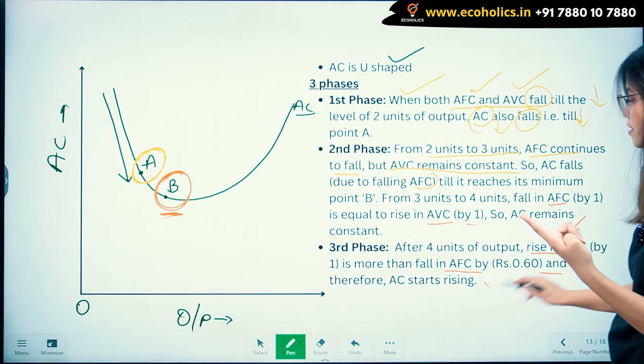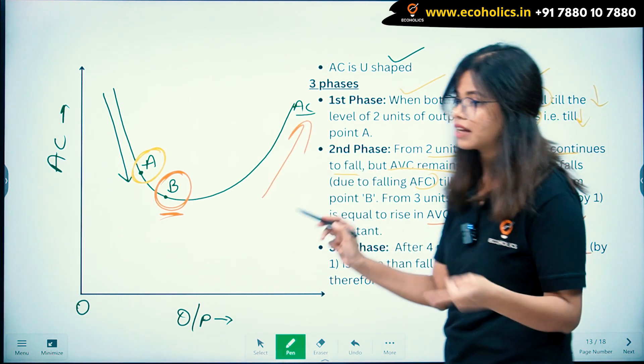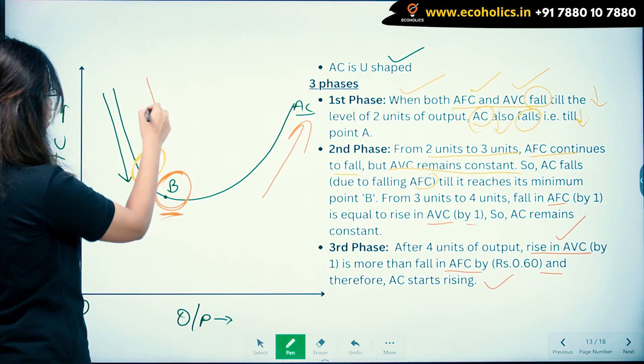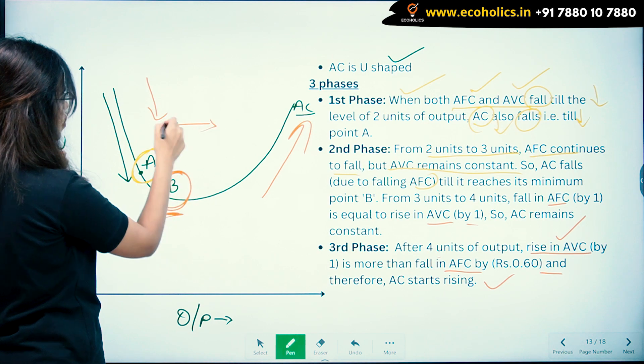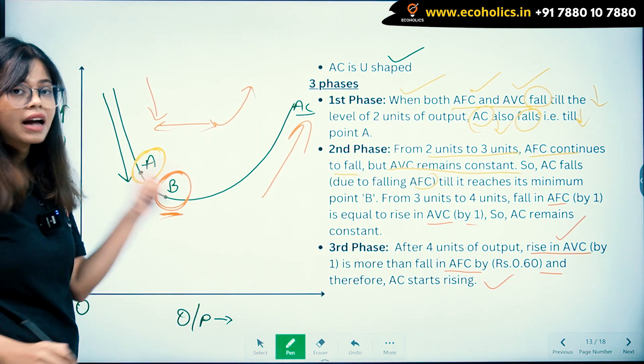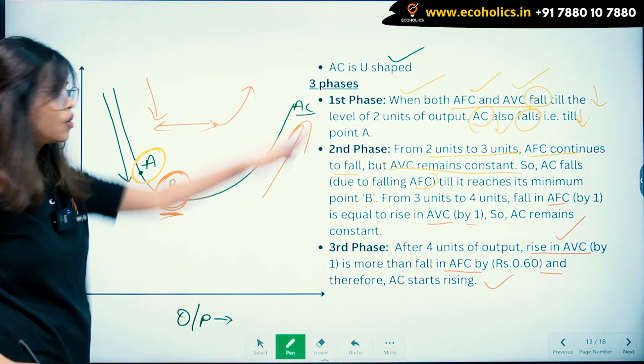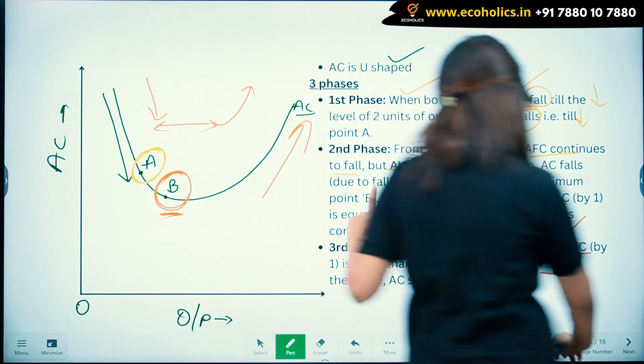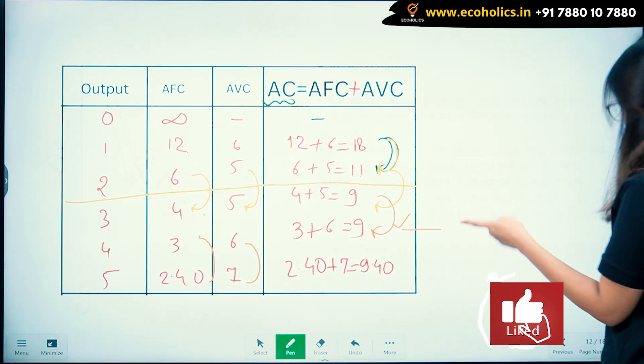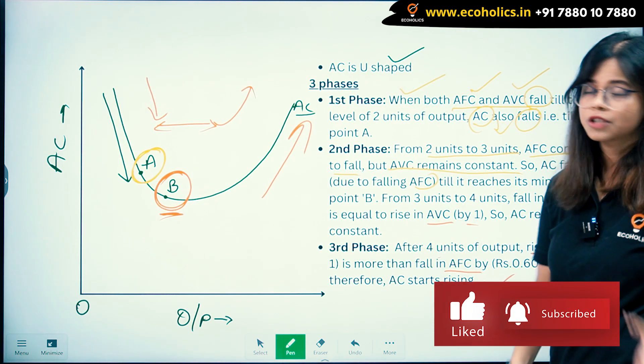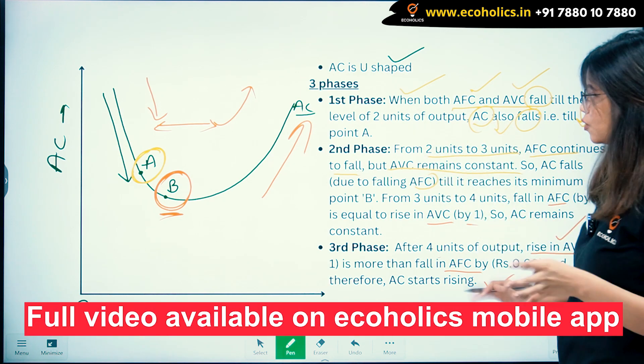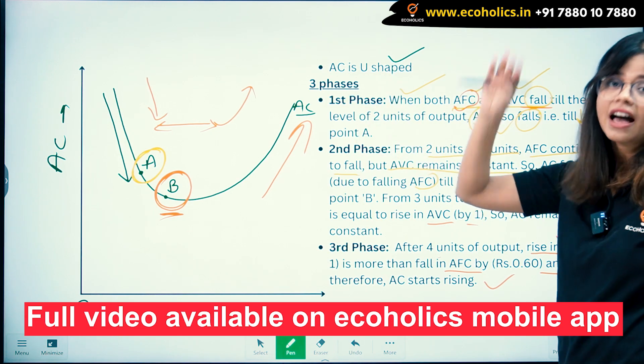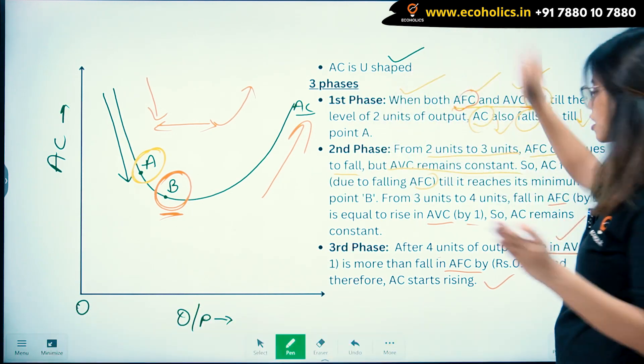And therefore AC starts to rise. So basically what is happening - your AC is falling, then it reaches its minimum point, and then it starts to rise. That is the meaning of these three phases. Whatever information is given here is derived from this schedule. When you see and refer to that and what I explained, you will understand this more nicely. AC is falling, then it reaches its minimum level, and then it again starts to rise.